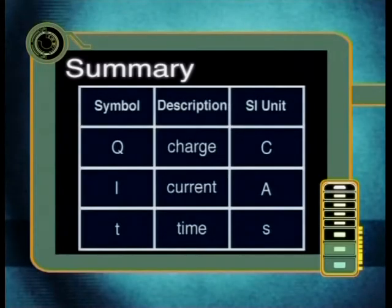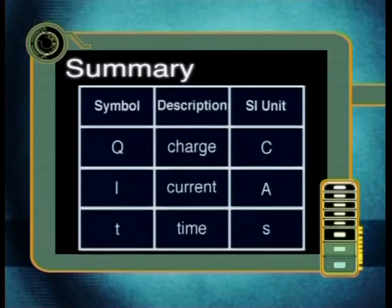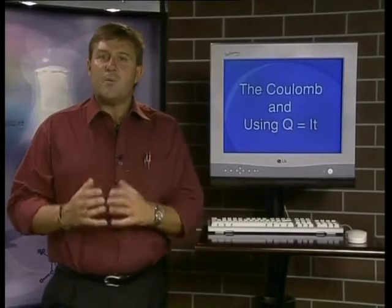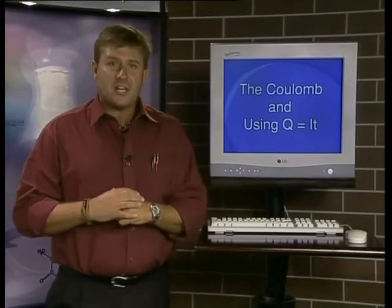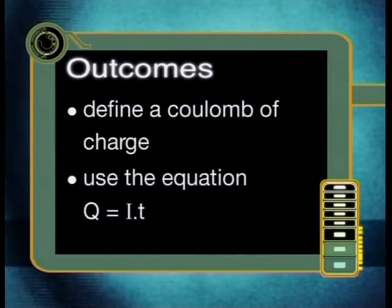q stands for charge, which we measure in coulombs. i stands for the current, measured in amperes, and t stands for time, measured in seconds. Today we will investigate exactly what a coulomb of charge actually is. By the end of this lesson you should be able to define a coulomb of charge and use the equation q is equal to i times t.